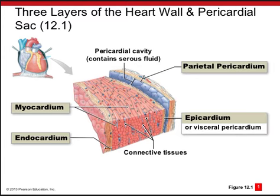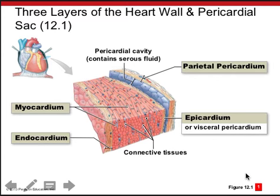The pericardial sac surrounds the heart and is formed by the parietal pericardium reinforced by an outer fibrous layer. The pericardial cavity is bound by two serous membranes: the visceral pericardium, which clings to the heart, and the parietal pericardium forming the outer wall. It contains pericardial fluid, which lubricates the heart as it pumps so it doesn't irritate, inflame, and scar. Most internal organs are surrounded by a serous membrane secreting lubricating fluid to ease movement.